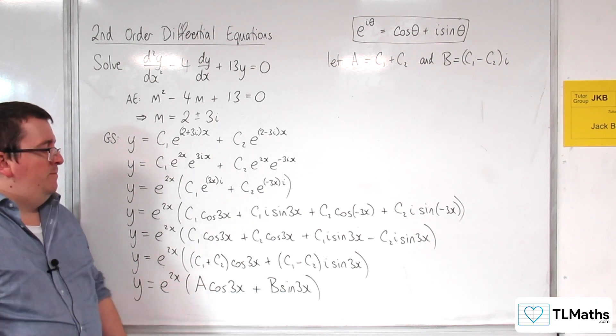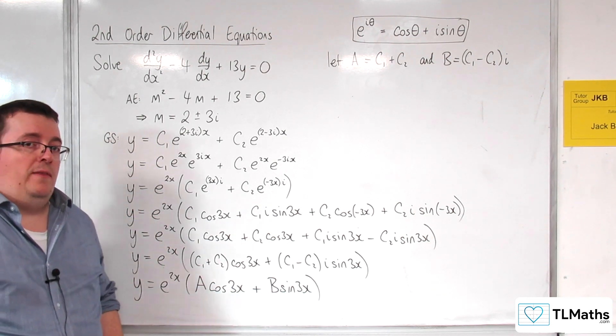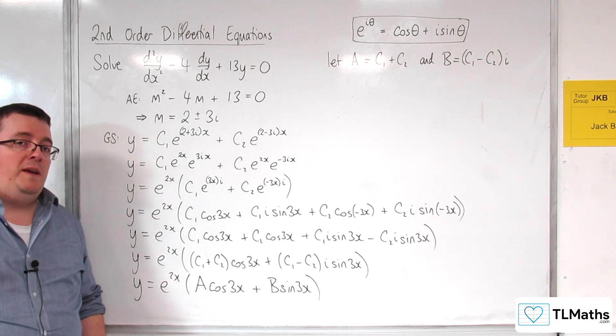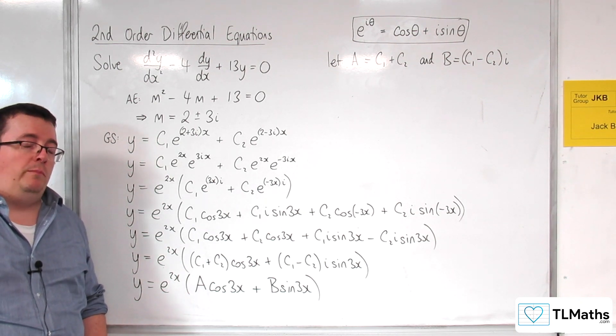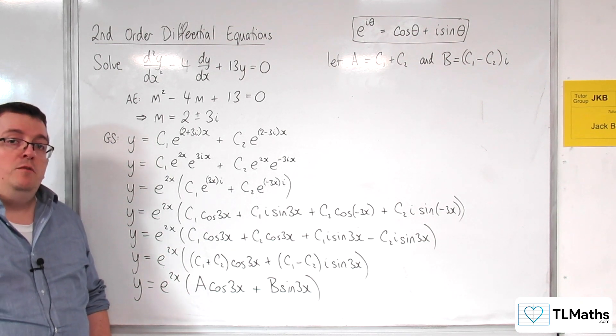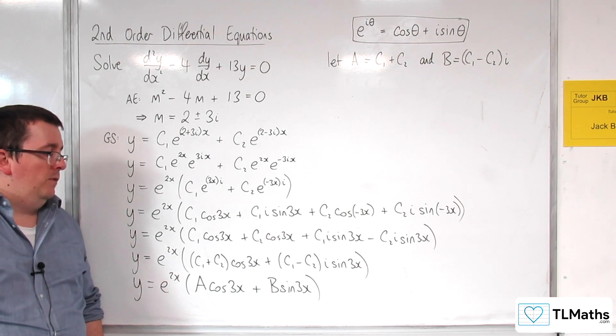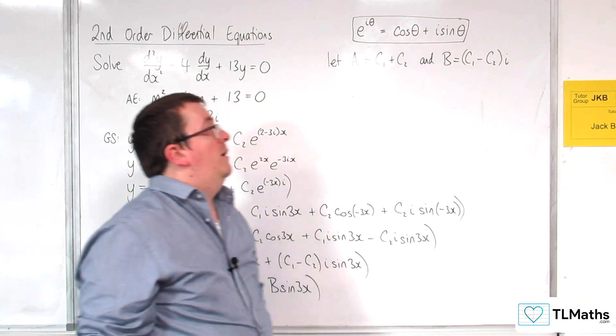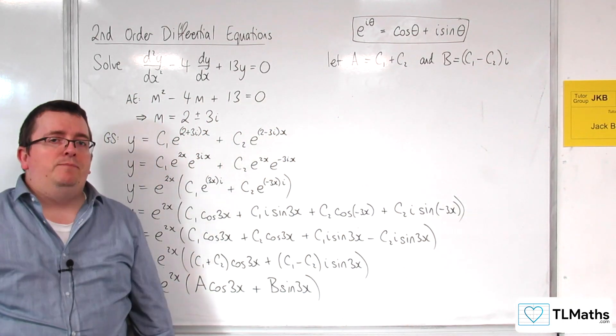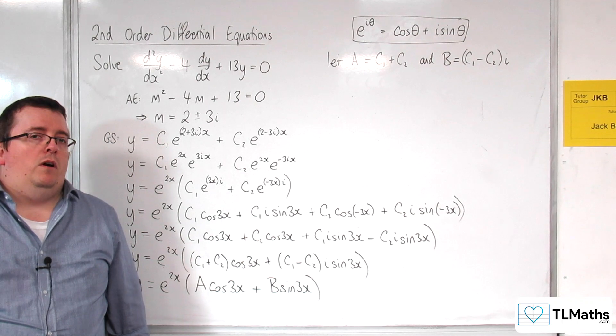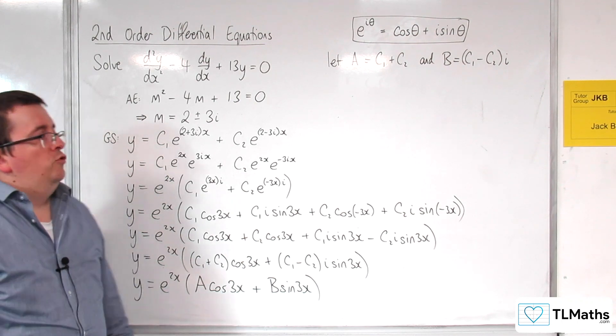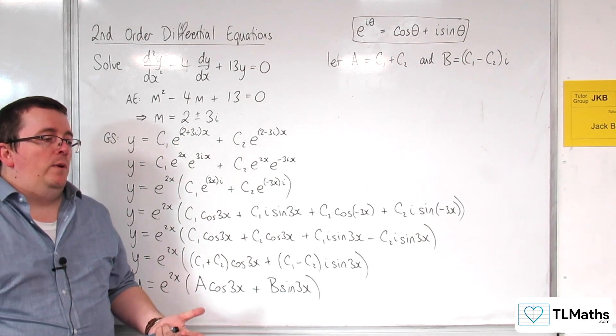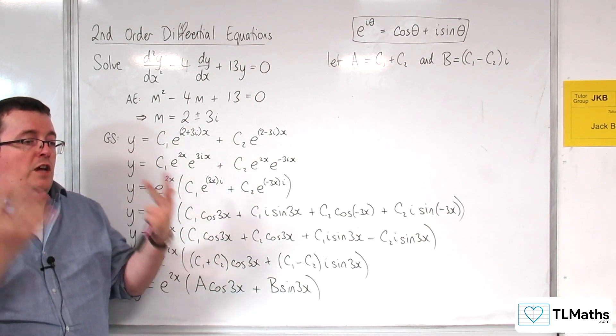Now, a and b here, this is the bit that's the kicker, right? a and b here are going to be considered real for all the problems that we consider. Now, you might be looking at that going, oh, that seems a bit odd because up here I've said that b is equal to c1 take away c2i. How can I guarantee that a and b are both real?